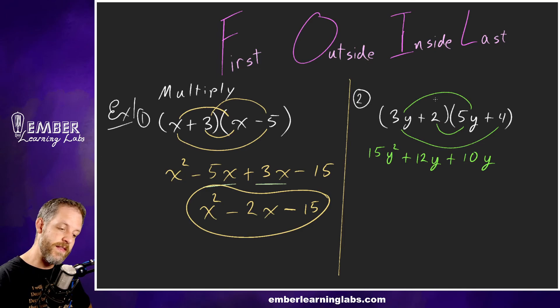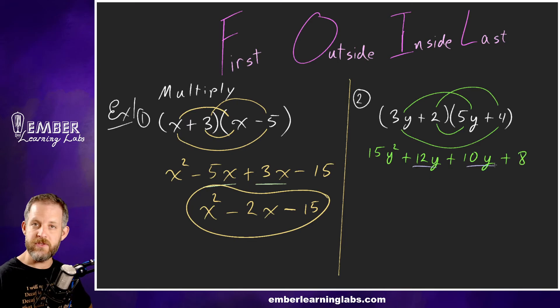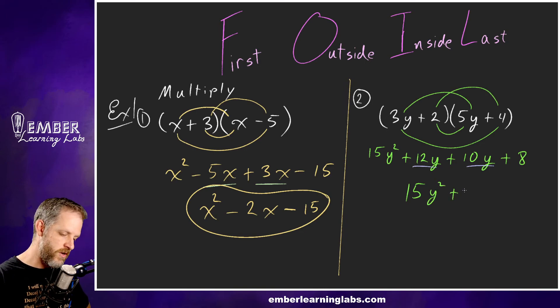We've got to finish by combining like terms. Bring down our 15y², 12y plus 10y is 22y, and then we bring down our plus 8. That's all there is to that - it's easy peasy lemon squeezy.